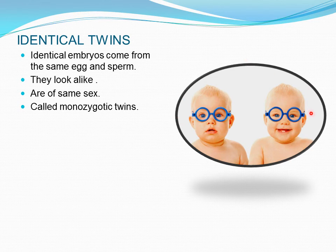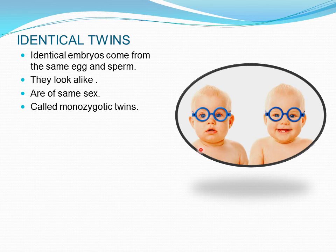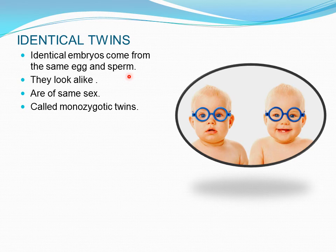Identical twins look almost similar to each other. They are formed when a fertilized egg — the zygote — separates into two sets of cells, both of which continue to divide until implantation. These two identical embryos come from the same egg and sperm, so they look alike, are of the same sex, and are called monozygotic twins.